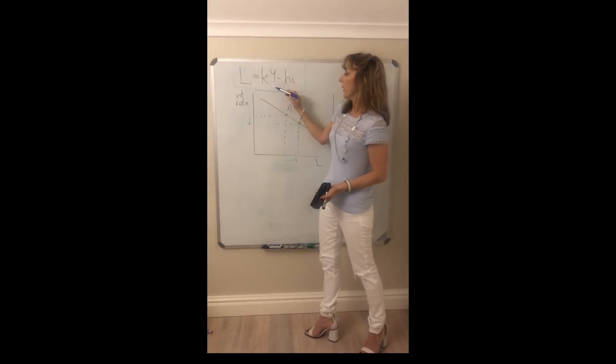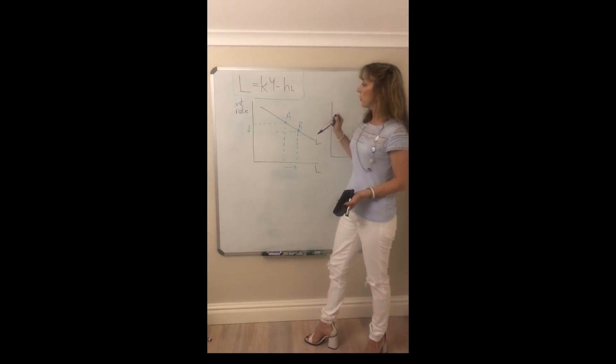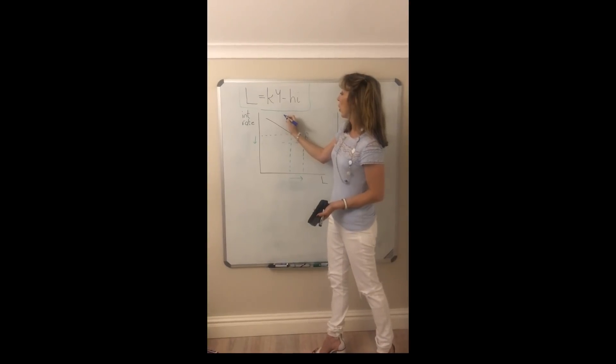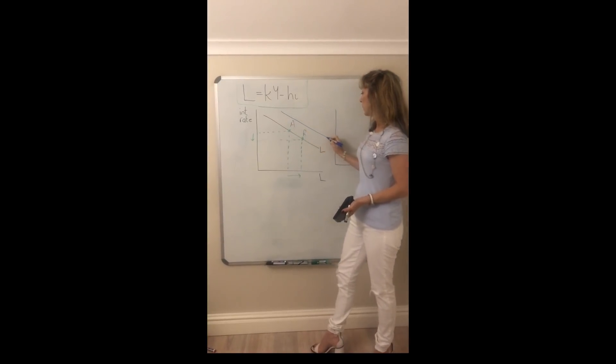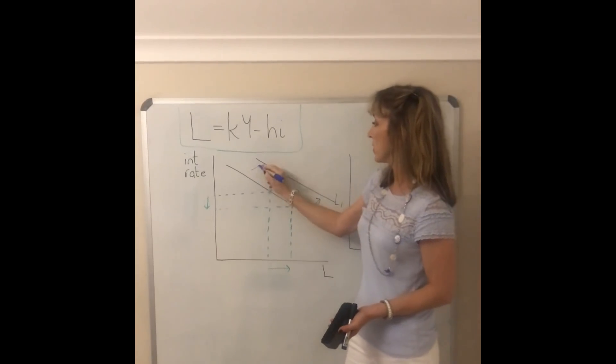If income rises, that's one of the things we hold constant when we plot our demand for money curve. So if income were to change, the whole liquidity demand function would shift, say to the right if income increases.